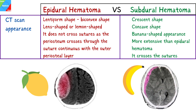For subdural hematoma, the typical presentation is crescentic, just like the crescent shape of the moon. It can also be described as a concave or banana-shaped appearance. It is more extensive than epidural hematoma, with the internal margin paralleling the cortical margin of the adjacent brain. Since it occurs in the subdural space, it crosses the sutures.